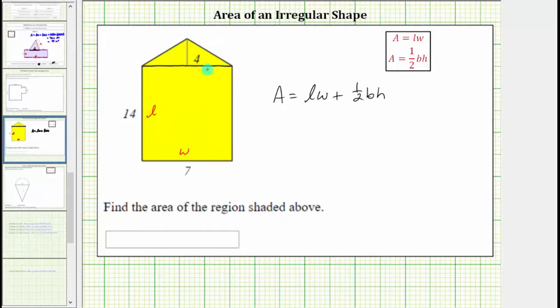Now looking at the triangle, the base would be the same length as the opposite side, which is seven units. So the base of the triangle is seven units, and the height is four units.